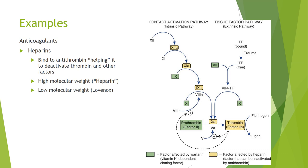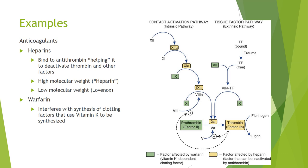This will reduce the total amount of fibrin produced. Next we have warfarin. Rather than helping antithrombin deactivate those yellow factors, warfarin prevents future synthesis of factors — it's not going to affect the factors already floating around, it's going to prevent new factors from being made. Certain factors need vitamin K in order to be synthesized, so warfarin targets those factors, shown here in green.